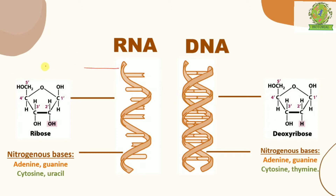RNA is present in the cytoplasm, whereas DNA is always present inside the nucleus. The strands of RNA are made up of ribose sugar, while DNA has deoxyribose sugar. The structure of both sugars is the same except that ribose has a hydroxyl group (OH) whereas deoxyribose has only a hydrogen group — oxygen is removed, hence the name deoxyribose.